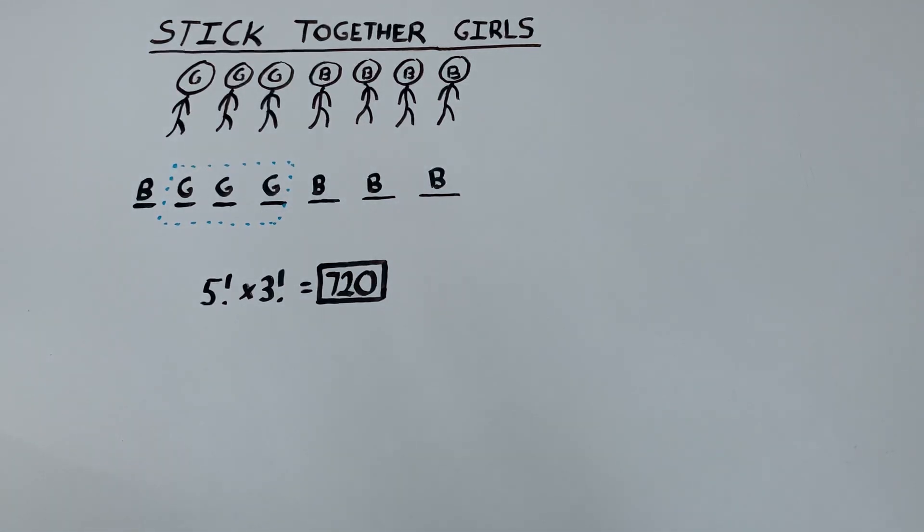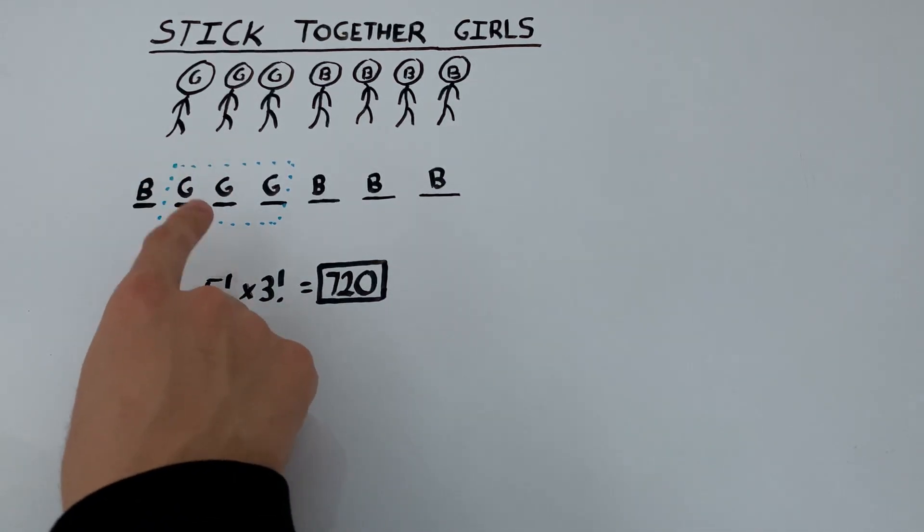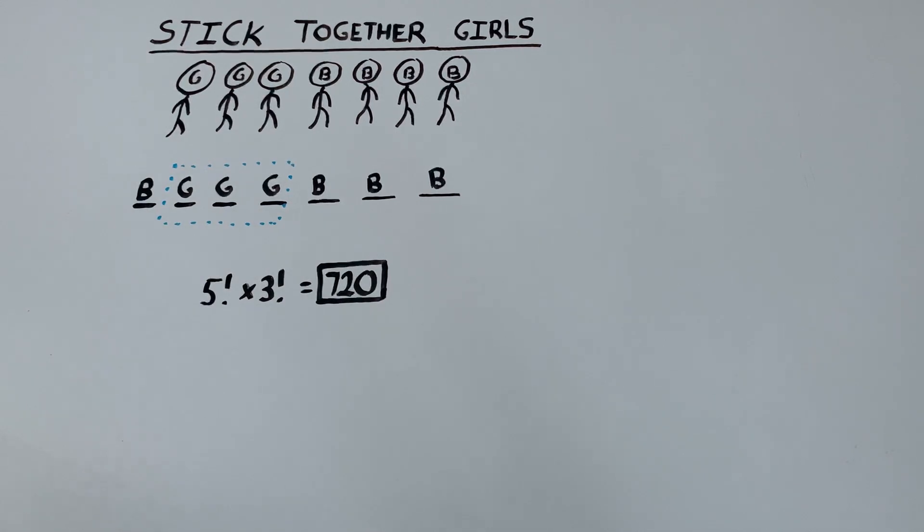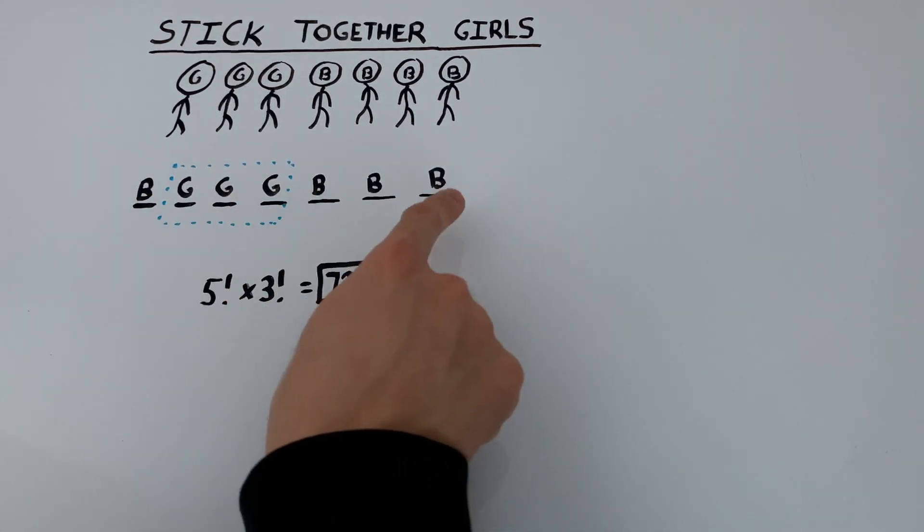So once again, to summarize, the key step in this problem was to treat our three girls as a single unit. This way, we take a problem involving seven people and turn it into one involving five units.